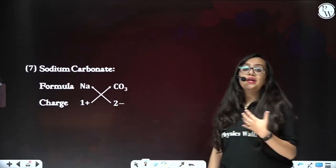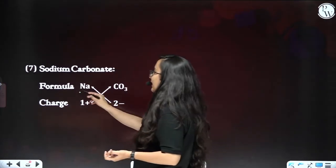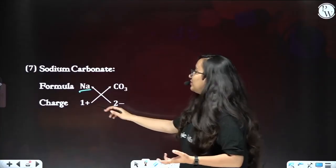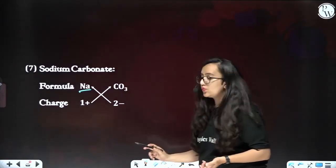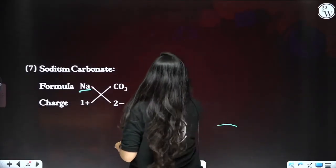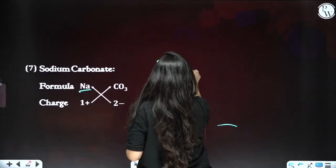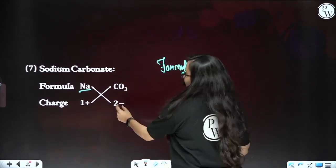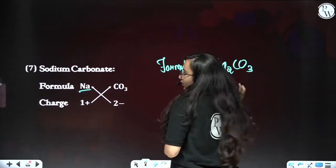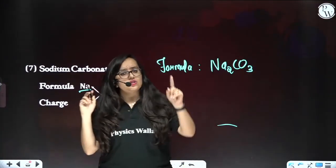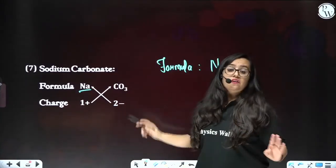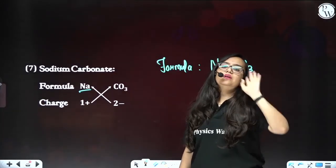Next is sodium carbonate. Sodium is Na and carbonate is CO₃. Na is plus 1 and carbonate is 2⁻. Cross-multiplying: two goes with sodium, giving Na₂CO₃. No brackets here because there is only one carbonate polyatomic ion. If there were two carbonates, then we would make brackets.